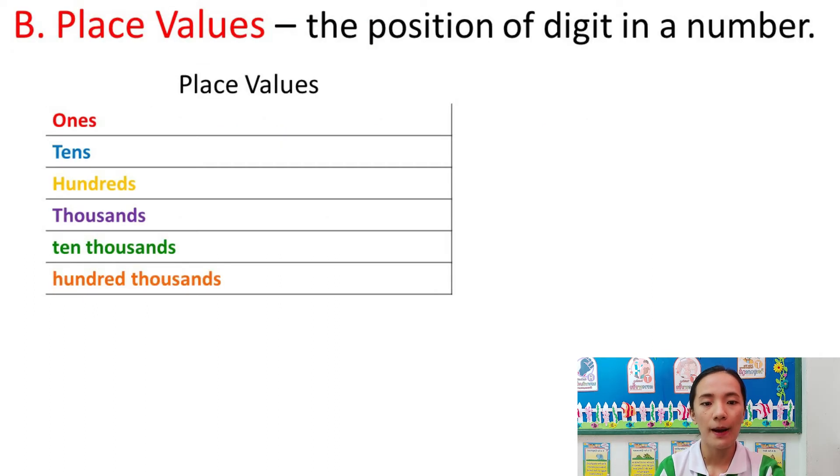Next, place values. Place values are the position of digit in a number. So for today, we'll be learning about the 6 place values in a number. These are ones, tens, hundreds, thousands, ten thousands, and hundred thousands.